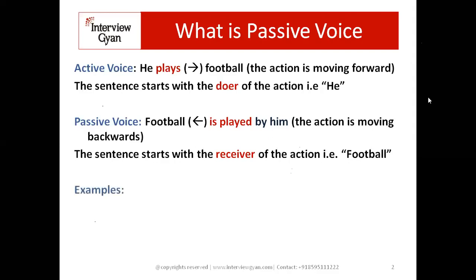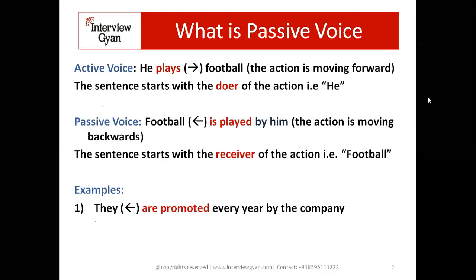Example number one: 'They are promoted every year by the company.' From this example we can see there is an indicator — 'by the company.' Through this we can understand it's a passive voice sentence. We can also look at the red combination 'are promoted,' which is also a combination indicating passive voice. The meaning of the sentence is: 'Unko har saal promote kiya jata hai company ke dwara.' So 'they' is the receiver, and the action of being promoted happens to them — it's a backward action case.